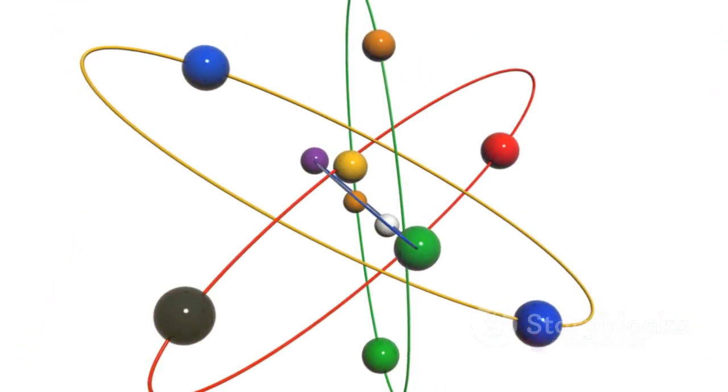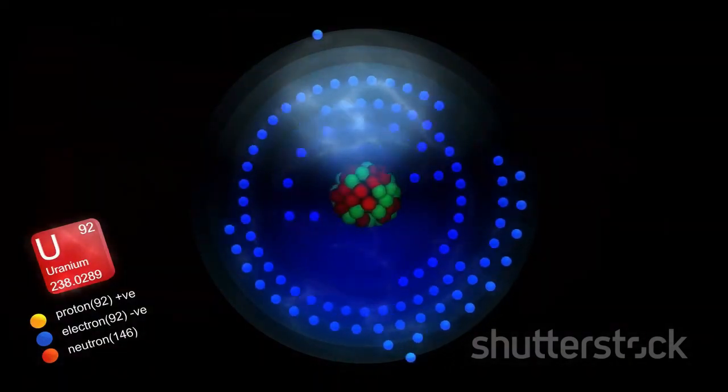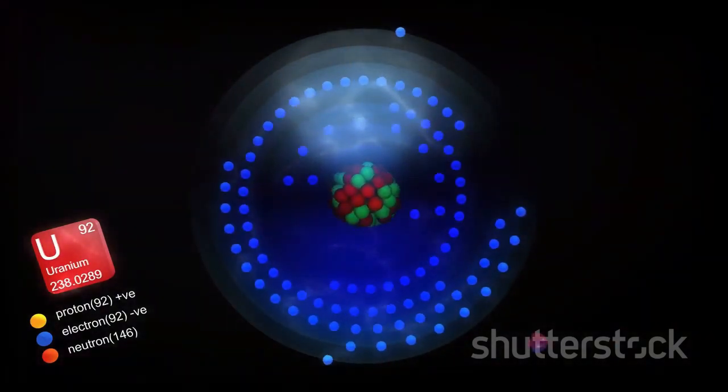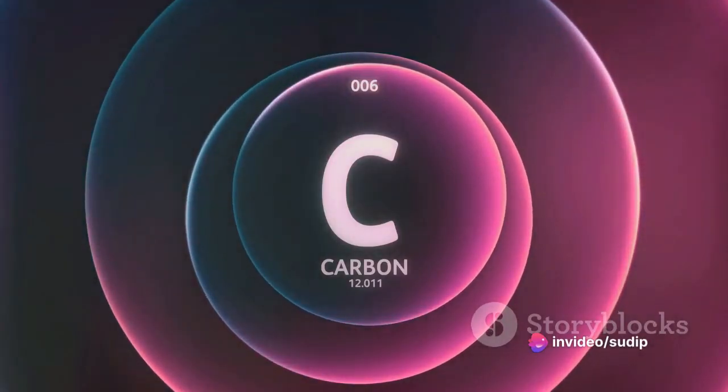For instance, an atom with six protons will always be carbon, no matter how many neutrons are present. On the other hand, the mass number is the sum of protons and neutrons in the atom's nucleus. It gives us an idea about the overall weight of the nucleus.